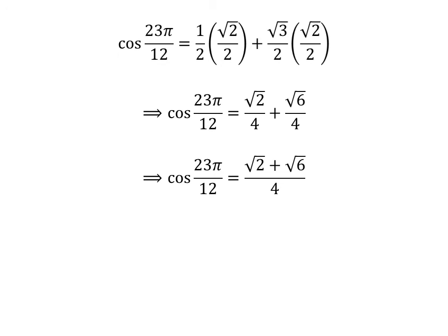As the denominator of both fractions in the above expression is the same, cosine of 23 times pi upon 12 is equal to square root of 2 plus square root of 6 upon 4. Taking out the common factor square root of 2 in the numerator gives us cosine of 23 times pi upon 12 is equal to square root of 2 times 1 plus square root of 3 upon 4.